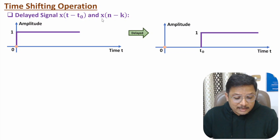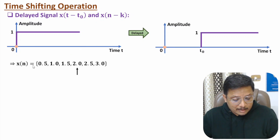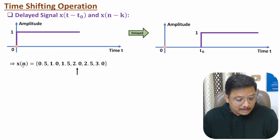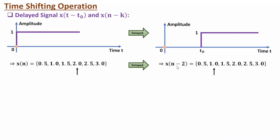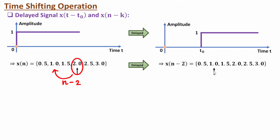Let me explain a discrete domain example. We have a discrete signal x(n) with a reference indicated by an arrow. If I want to delay this signal, we forward the signal in the forward direction, and the reference shifts toward the backward direction. So for x(n - 2), we shift the reference backward by two elements. Now the reference arrow is at position 1.0.